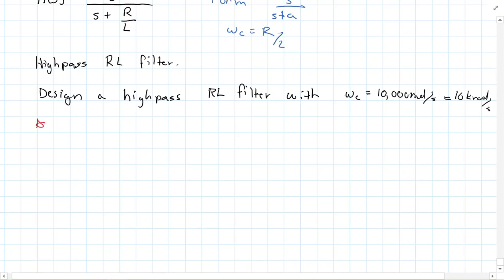Design a high-pass RL filter with omega C equaling 10,000 radians per second, or 10 krad per second. Remember, we always have to be careful if given FC, you need to compute omega C, which is equal to 2 pi FC. Just remember when a problem you're looking at, you have to be careful with this.